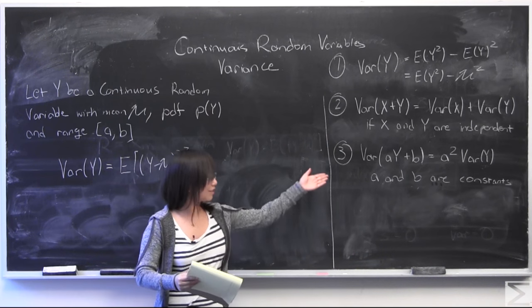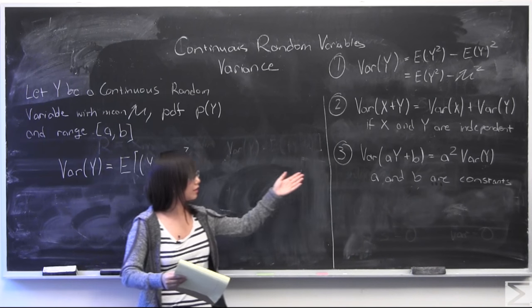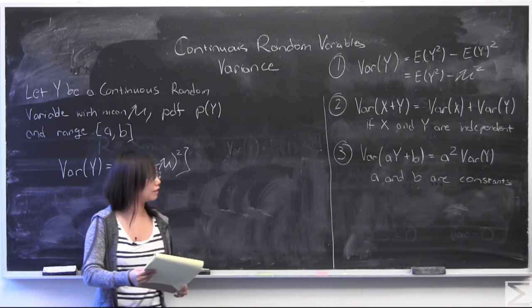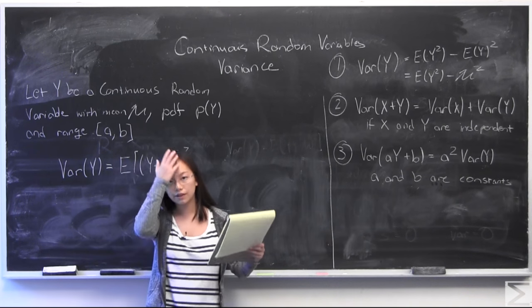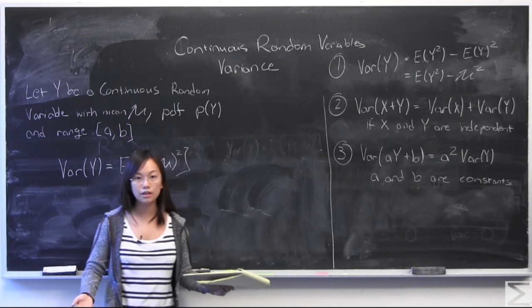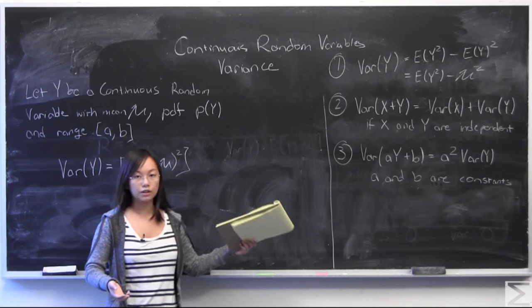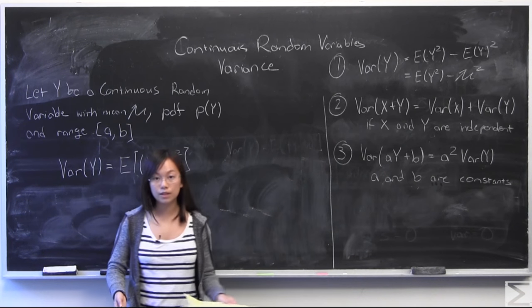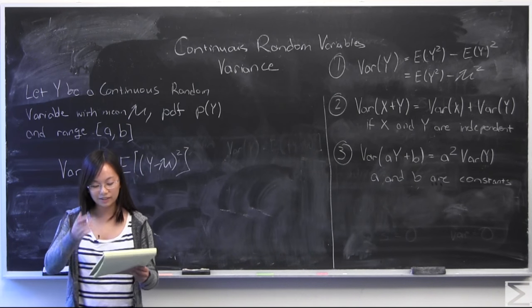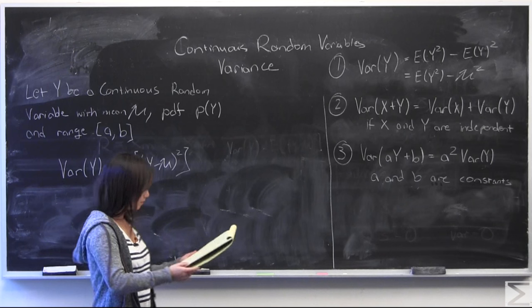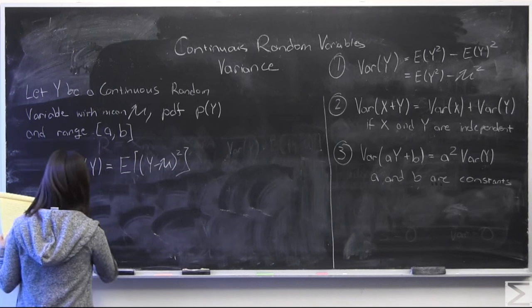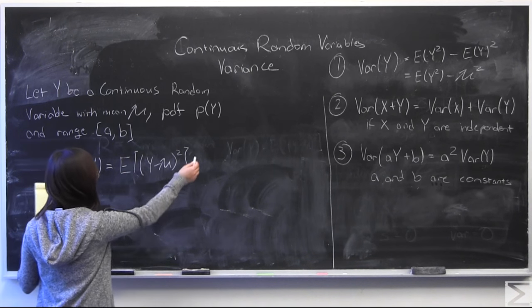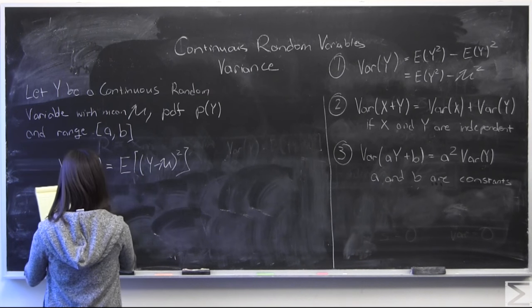This is very helpful if you have two random variables and you need to find the variance of their sum. For the third part, I will be proving that variance of ay plus b, where a and b are constants, is equal to a squared times the variance of y. I am going to be using the other two properties in order to do so.